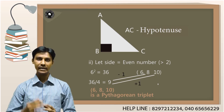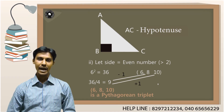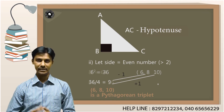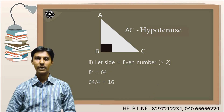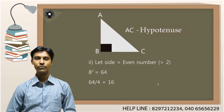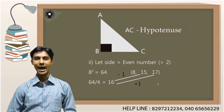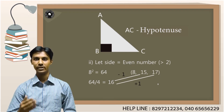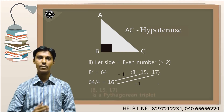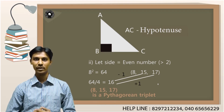Similarly, let me take another even number — 8. 8 squared divided by 4 is 64 divided by 4, which equals 16. I will subtract 1 from 16 to get 15. I will add 1 to 16 to get 17. So 8, 15, 17 results in one more Pythagorean triplet.